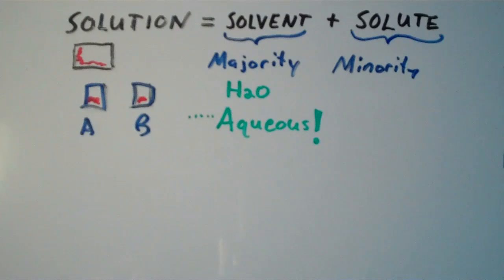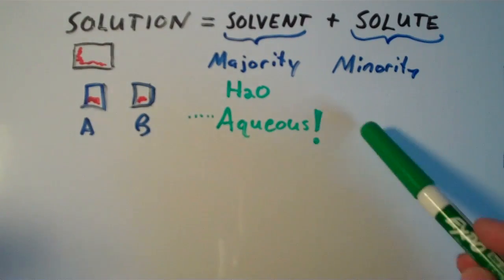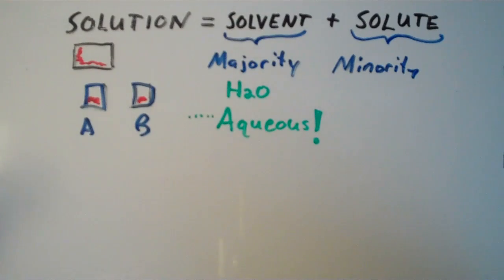It would just eat through everything. There would be no way to contain it. You wouldn't be able to have a container for it. So there really is no such thing as a literal universal solvent. But H2O is just a solvent in many, many, many reactions, and it is very, very abundant.